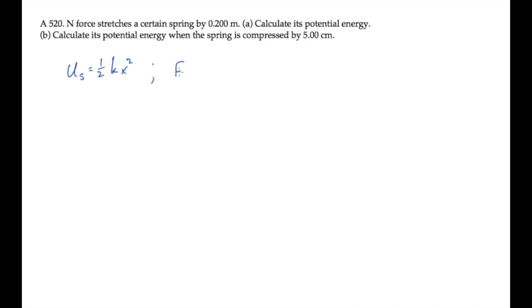So we need to find that first, which we can do using Hooke's law. The spring force equals -kx. Solve this for the spring constant k. It equals the ratio of the force to the stretch or compression. Here I'm using absolute values. Substituting the known numbers, we find k equals 2600 newtons per meter.